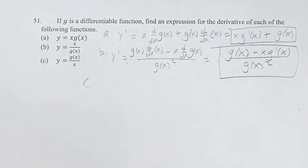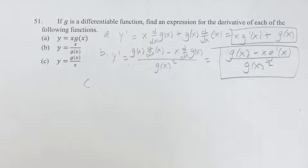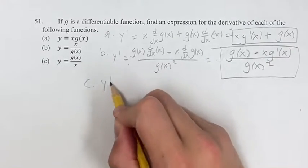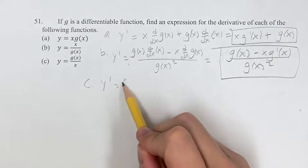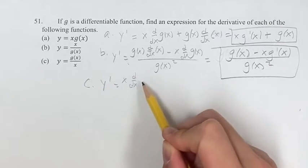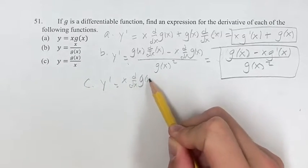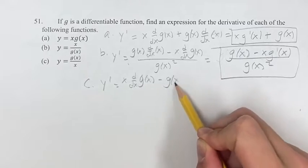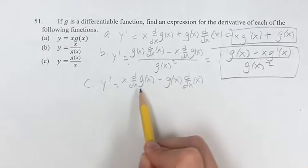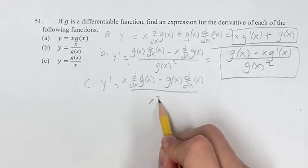And then c, we have a similar thing. We have another fraction. It's just flipped. So the derivative is going to be the denominator times the derivative of the numerator minus the numerator times the derivative of the denominator over the denominator squared.